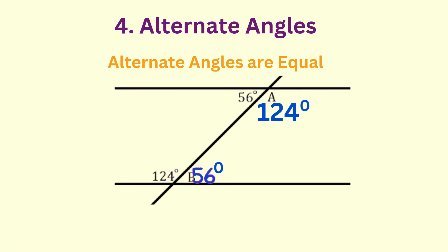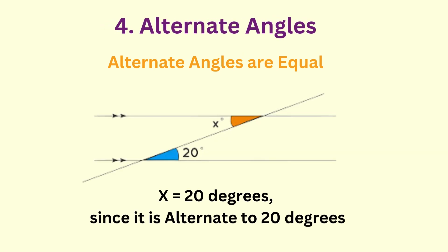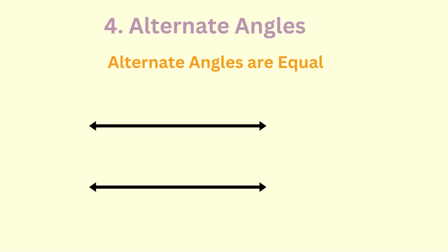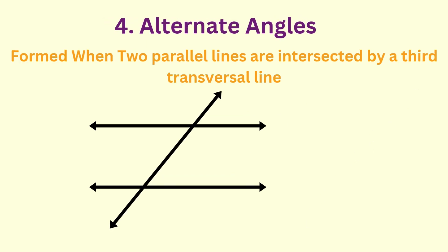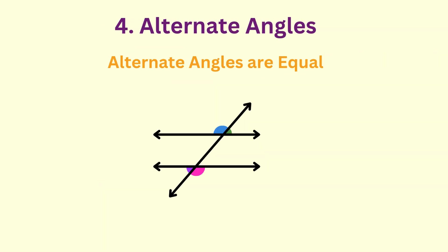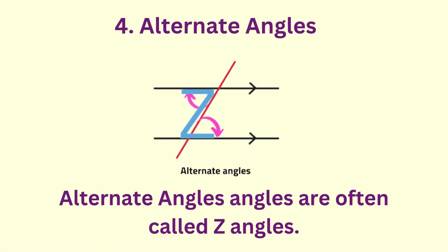Alternate angles are equal. Alternate angles are angles formed on the opposite sides when a transversal line intersects two parallel lines. For example, here are two parallel lines. Let's use a line to cut both parallel lines. The alternate angles are on opposite sides of the line and they are equal. These angles are sometimes referred to as z angles.